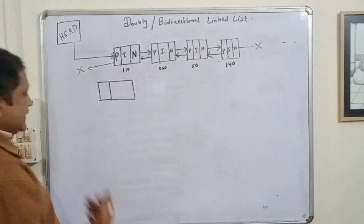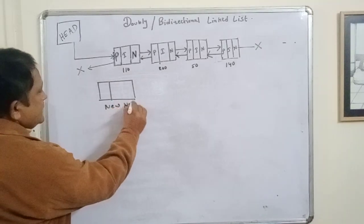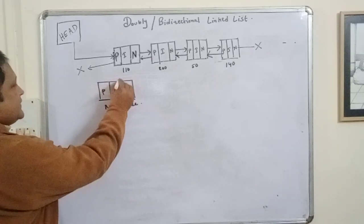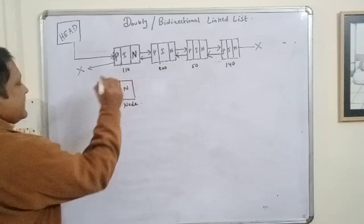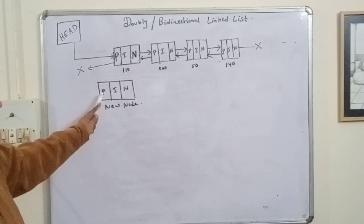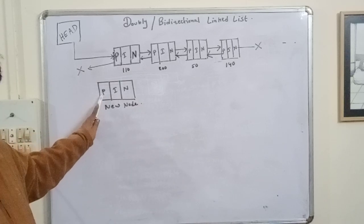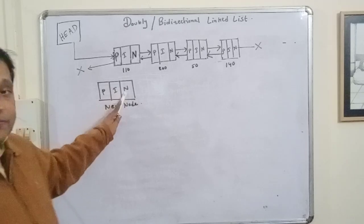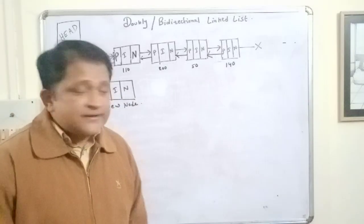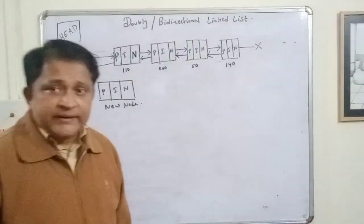The new node we are going to insert also has the same structure: previous, info, next. The previous part is a pointer that should contain the address of the previous connected node. The next part is a pointer that contains the address of the next node. And the info part contains the value, the data element, the content.